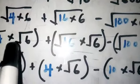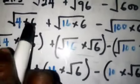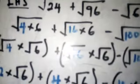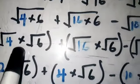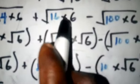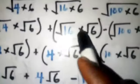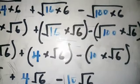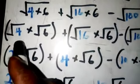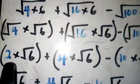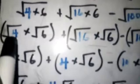Now split each product under the radical into two separate roots: root 4 times root 6, plus root 16 times root 6, minus root 100 times root 6. The reason for getting a perfect square factor is that its square root gives a whole number. So root 4 gives 2, as you can see with the blue marker here.